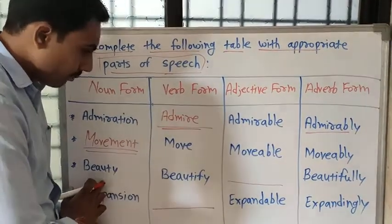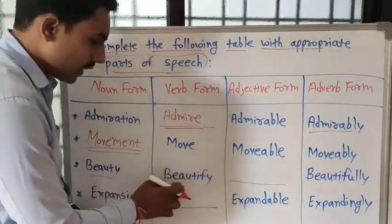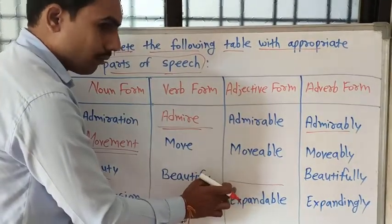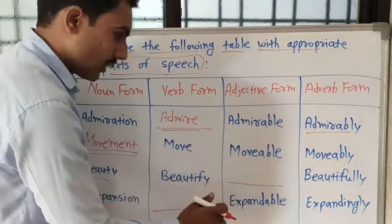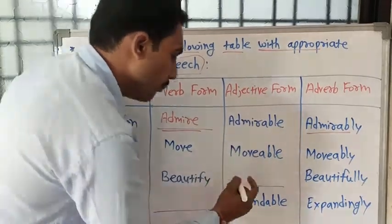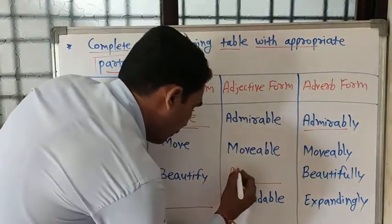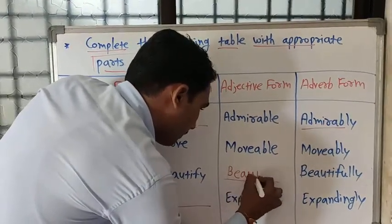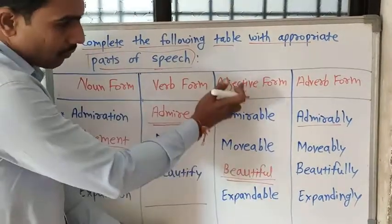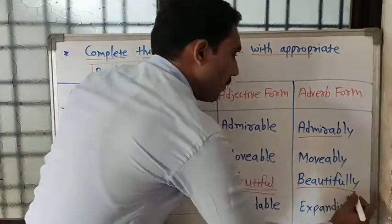The third one — 'beauty'. Beautify is the verb form. Remember this: beauty is a noun, beautify is the verb form, and you want to complete the adjective form in the blank. Dear students, look here: beauty, beautify, and beautiful — beautiful is the adjective form of beauty. And the adverb form is 'beautifully'.